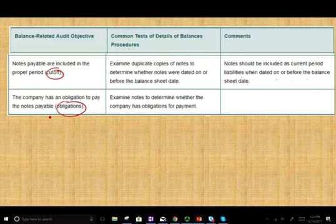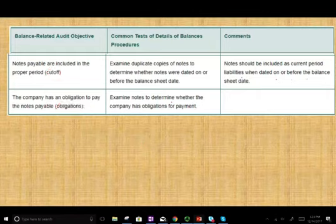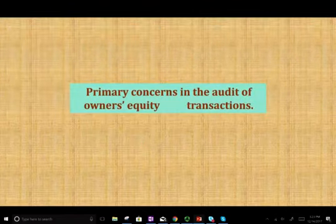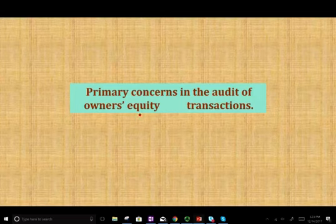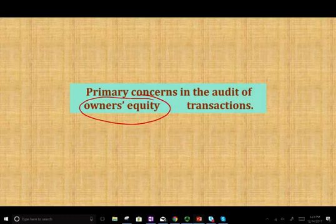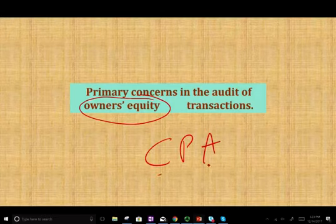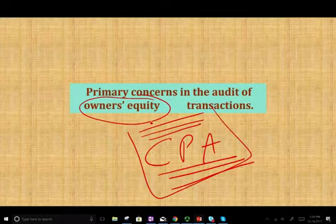And obligation, the company has an obligation to pay the note. Usually that's easy. Examine note to determine whether the company has an obligation for repayment. If you have a note on the books, obligation is not an issue. So this is basically all about debt. The next section, we're going to be still working within the cycle, which is capital acquisition and repayment cycle. But we're going to move to the owner's equity. And we'll start the primary concern in the audit of owner's equity. What are the primary concerns when we are dealing with common stocks, dividend retained earnings, so on and so forth. If you have any questions, any comments, by all means, email me or see me in class. Make sure to study hard, complete your quizzes and your homework. And if you're studying for your CPA exam, study hard.